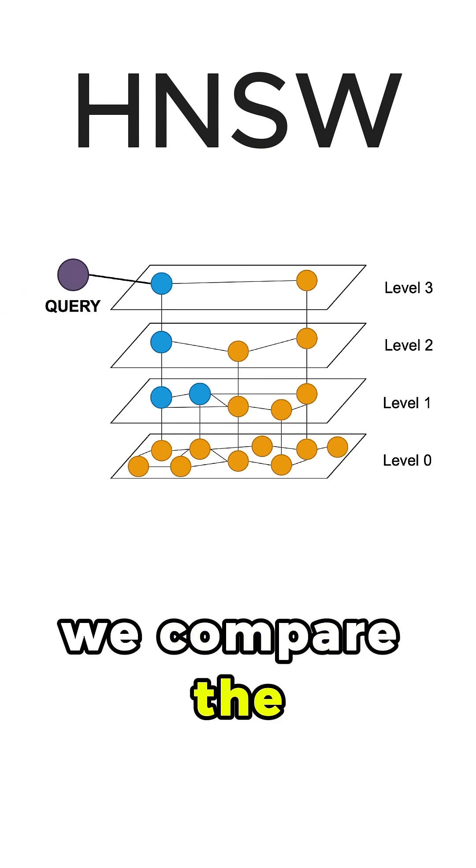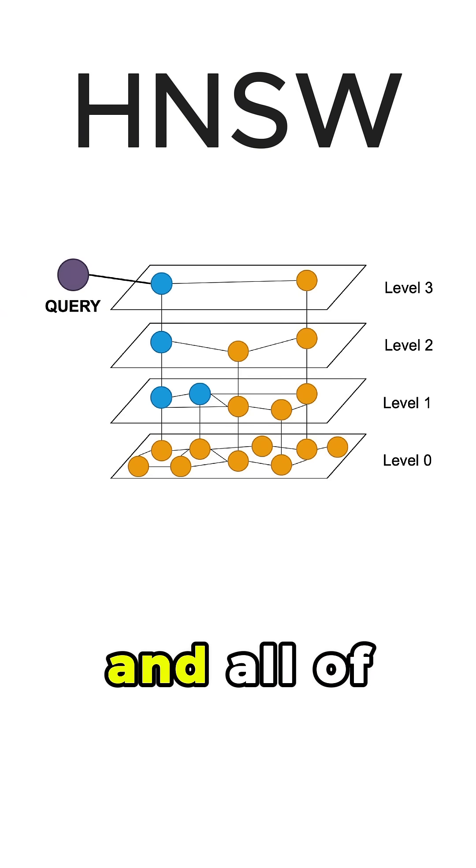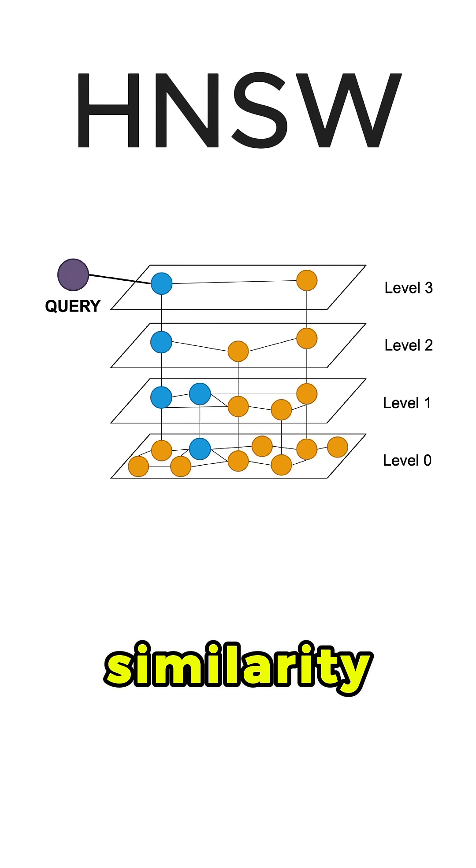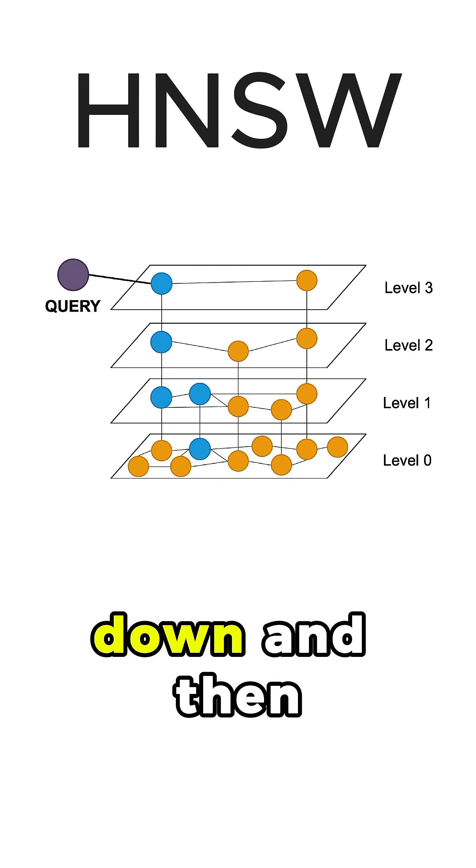Also, in this node, we compare the cosine similarity of this node with the query and all of its neighbors and see that this one here has the best similarity, so we go down.